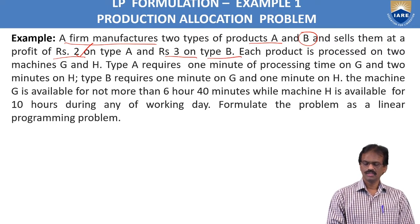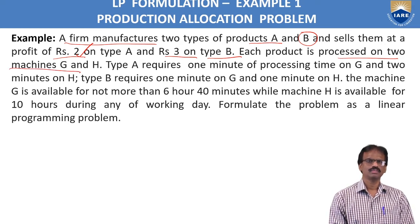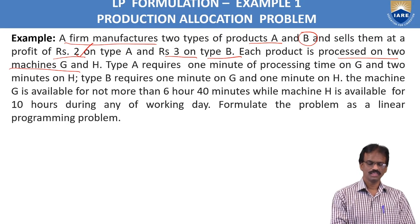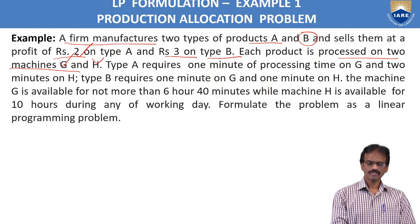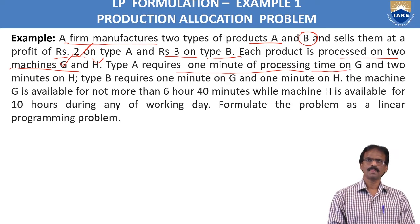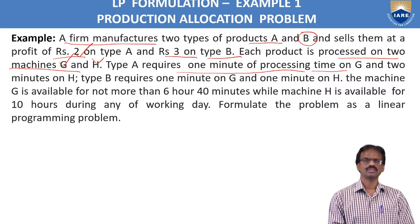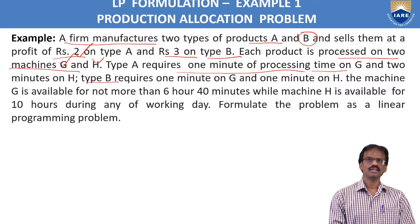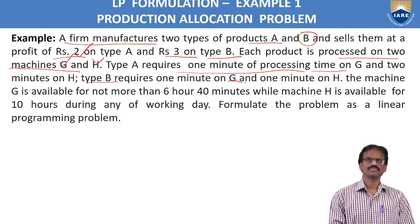Each product is processed on two machines. There are two machines: one is the G type machine and another is the H type machine. Type A requires one minute of processing time on G and two minutes on H. Type B requires one minute on G and one minute on H.